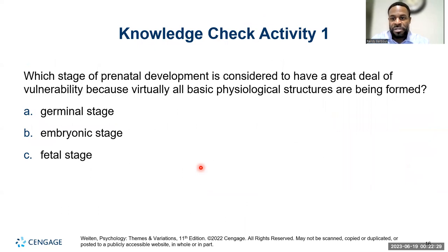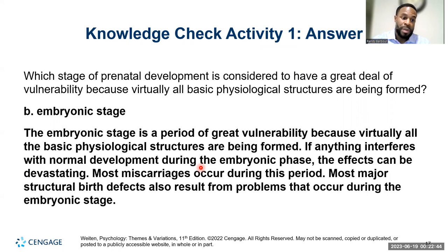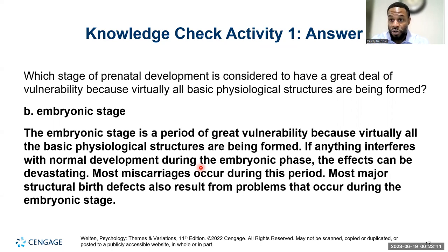Which stage of prenatal development is considered to have a great deal of vulnerability because virtually all basic physiological structures are being formed? The answer is the embryonic stage — because of those physiological structures and internal structures like the lungs and heart being developed, those bodily organs are being formed in that stage. It's important that you see low stress levels, better nutrition, and all of those things happening, because the fetus is very vulnerable during that stage. Most miscarriages occur during this period, along with most major structural birth defects.